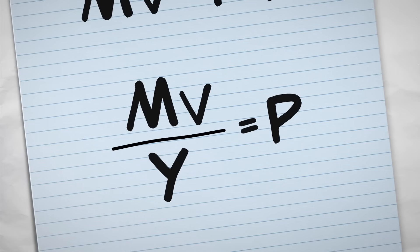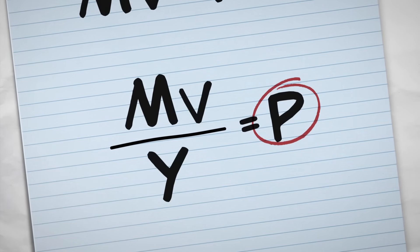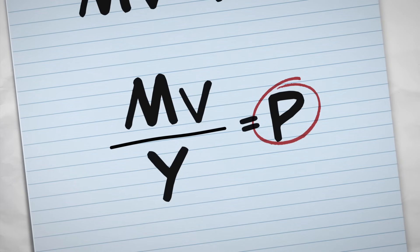What this equation tells us is that if prices are changing, there are three possible causes: changes in m, v, or y.